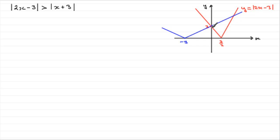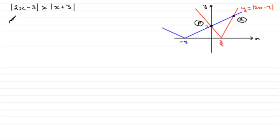We have two points of intersection between the blue graph and the red graph: point A and point B. We need to find these points. A seems obvious — it's where x is 0 — but I'll show you the method anyway. We'll start with B first, as it's possibly the easiest.